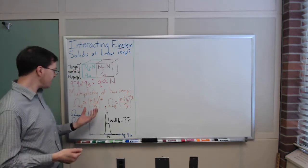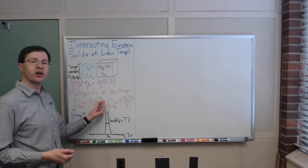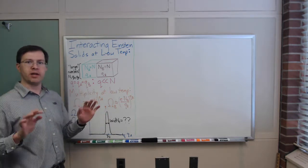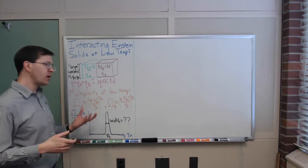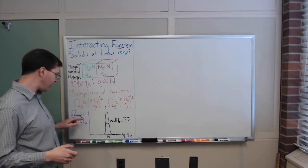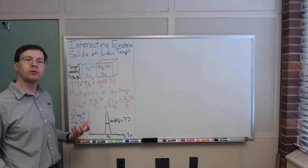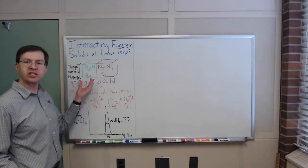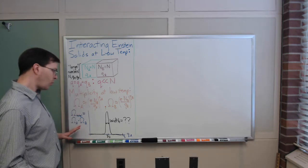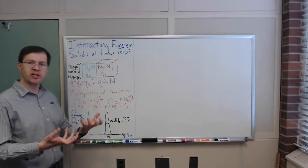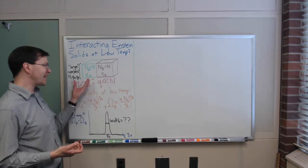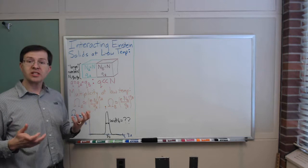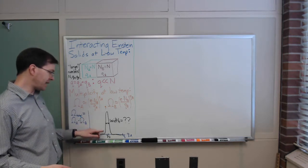A large number raised to a large-number power is ridiculously huge. Our goal is to graph Omega_total — the total multiplicity of the system, the total number of microstates — as a function of Q_A, the macrostate label. Since the two solids are independent, Omega_total = Omega_A × Omega_B: knowing Q_A and Q_B, I find those multiplicities and multiply them together.